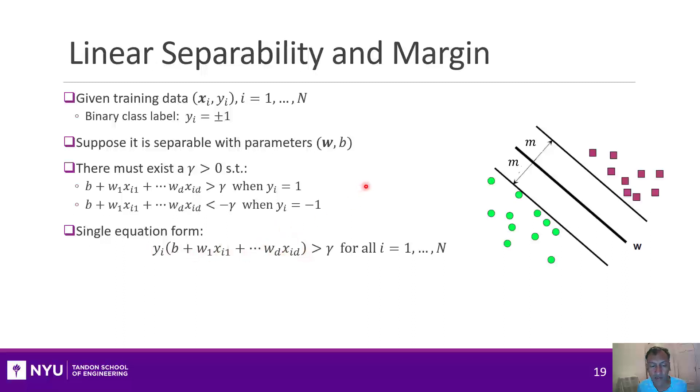Now, once I have that, I can define the margin is really just geometrically the minimum distance of these points to this line. But that's also just given by this gamma over w. And why is that the case? If you recall from the previous slide, the distance of a point to the line is just the value of that function divided by the norm of w. So when I take that minimum value of that function here, I get that minimal distance.